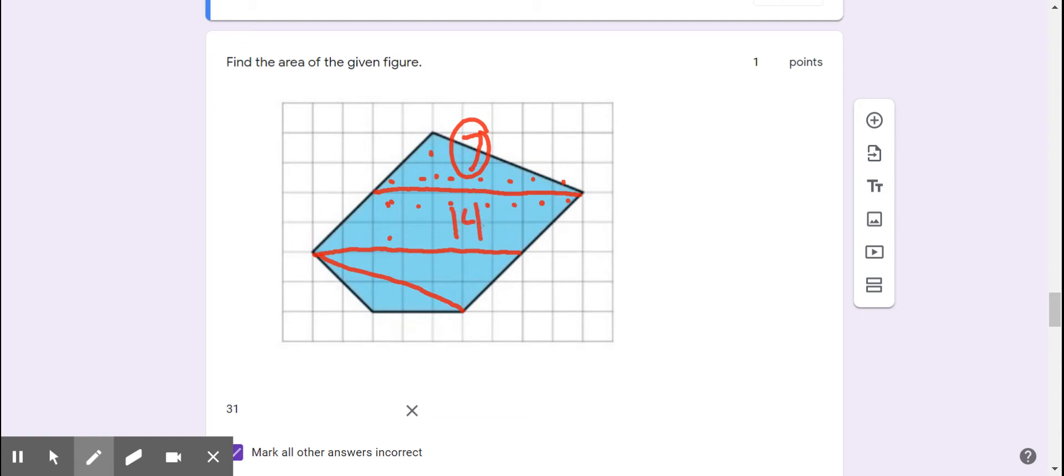And for this bottom triangle on the right, it is seven units by two units. Seven times two is 14, divided by two is seven.